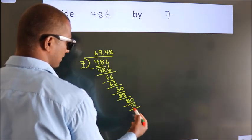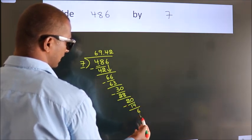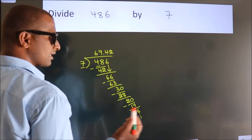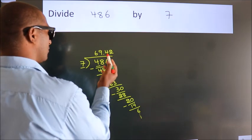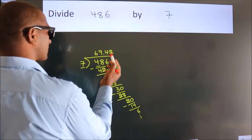Now, we subtract. We get 6. And the division continues. It is enough if we do up to 2 decimal places. Thank you.